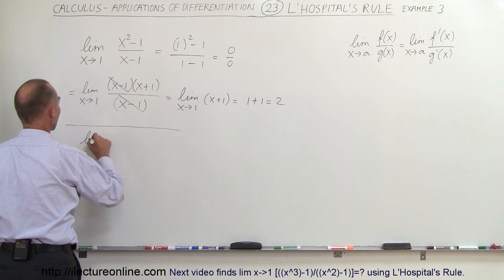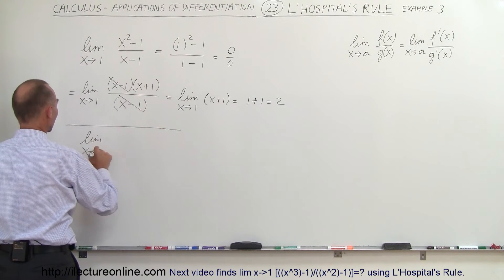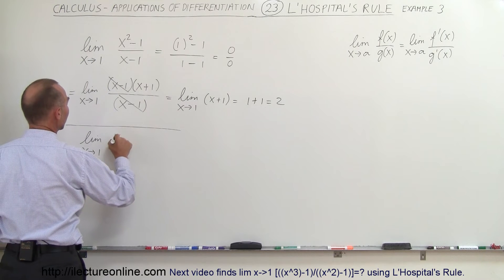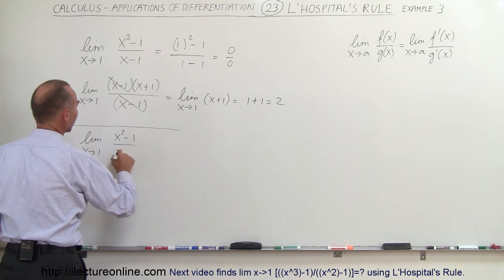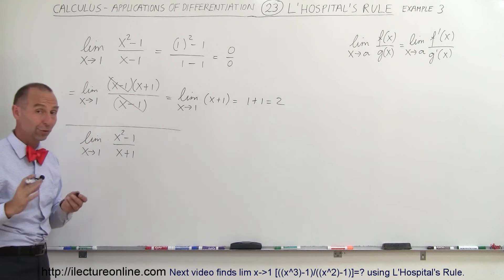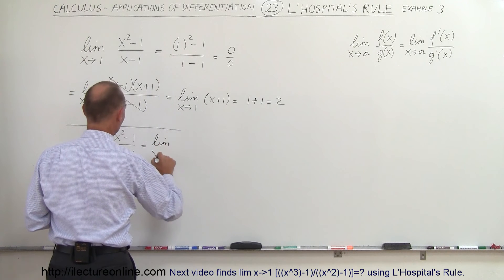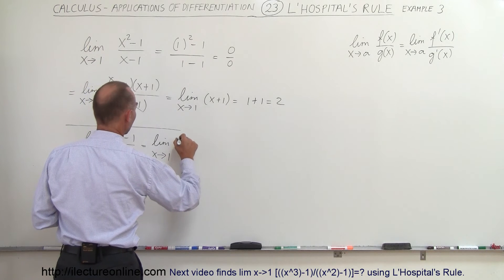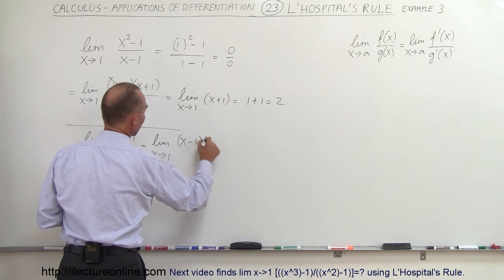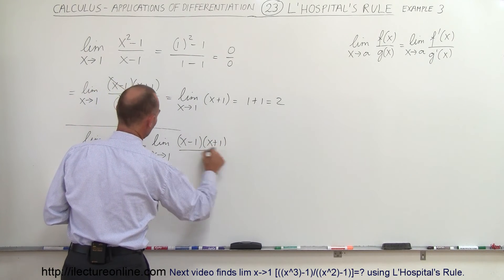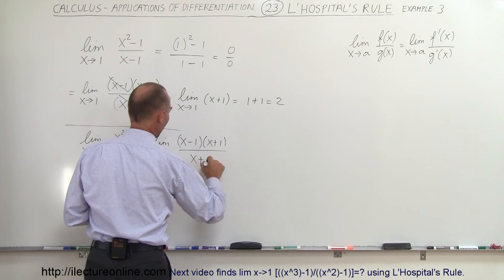If we change the problem just a little bit and we say what is the limit as x goes to 1 of the quantity x squared minus 1 divided by x plus 1. Well let's first factor it out and see what we get. This is equal to the limit as x approaches 1 of x minus 1 times x plus 1 divided by x plus 1.